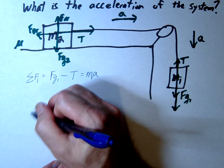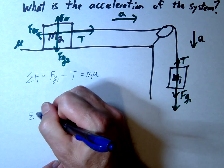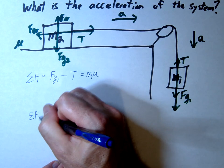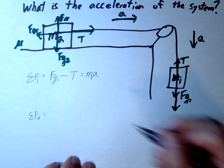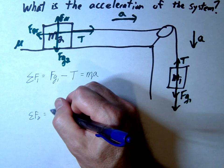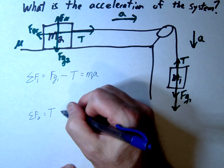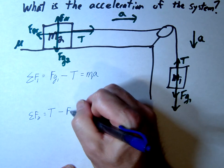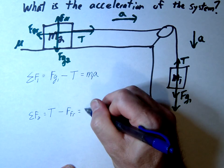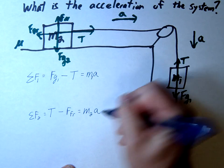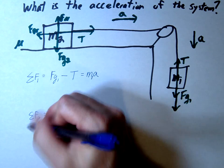For mass two, the sum of forces is tension to the right, which we'll call positive, minus friction. This equals m2a. That's our x-direction summation.